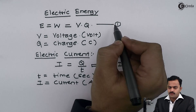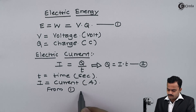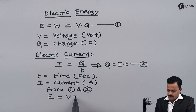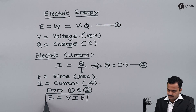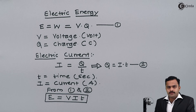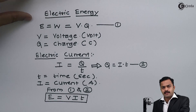This equation implies Q equals I into T. Let me write this as equation number two. If I substitute equation two into equation one, I'll get electric energy E equals V·I·T.